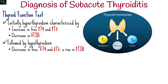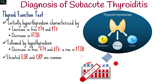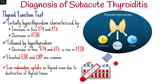Hypothyroidism is characterized by a decrease in free T4 and T3 and a rise in TSH. Elevated ESR and CRP are common, and low radioiodine uptake on thyroid scan is seen due to destruction of thyroid tissue.